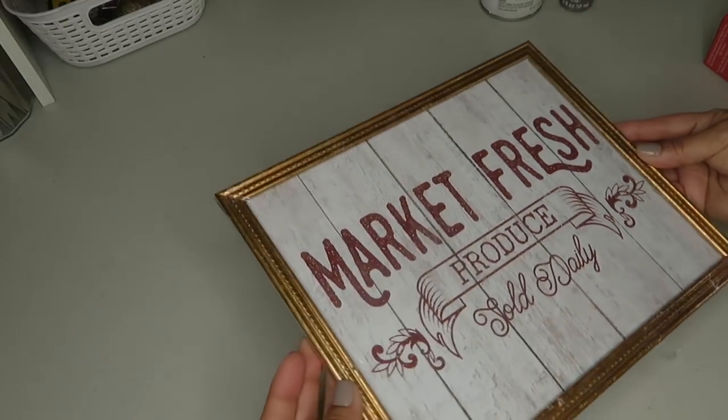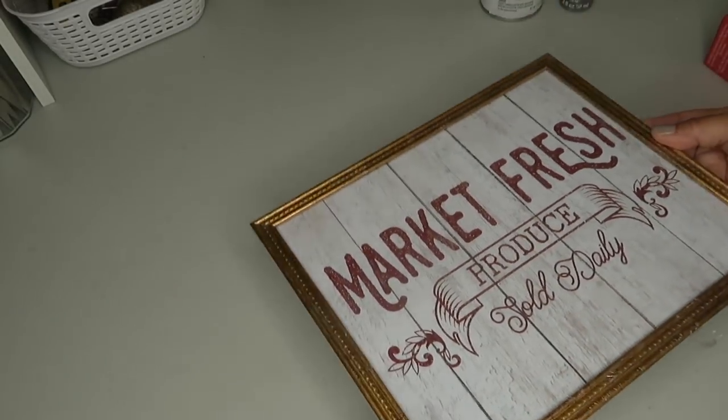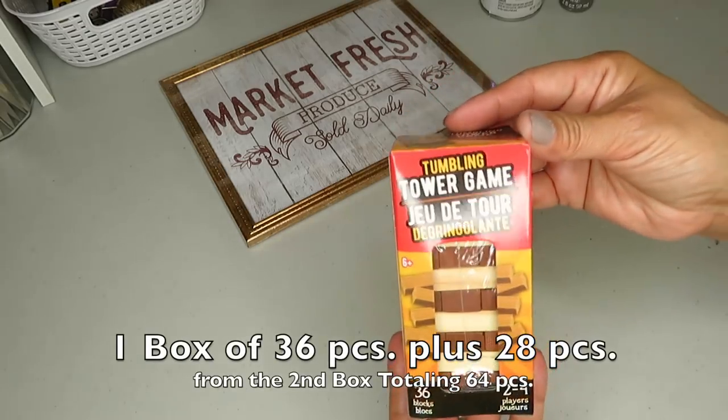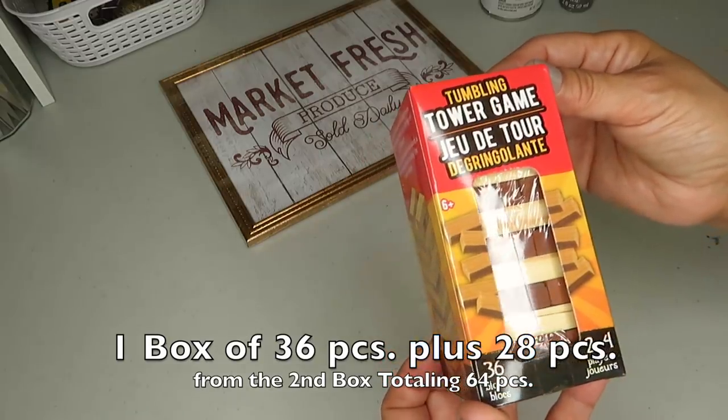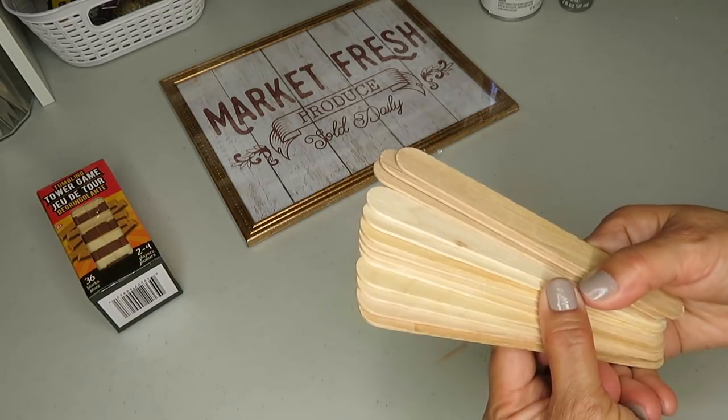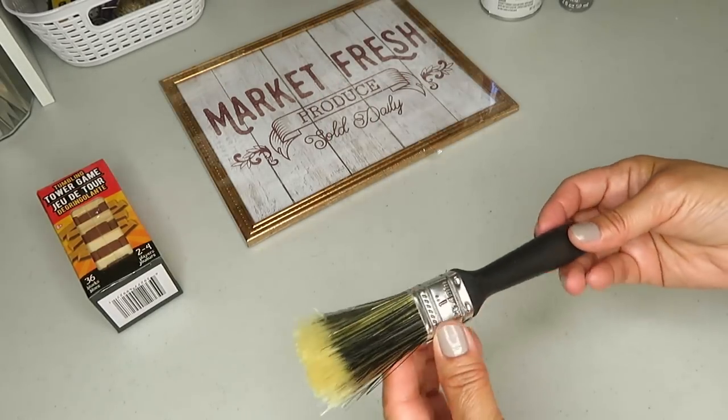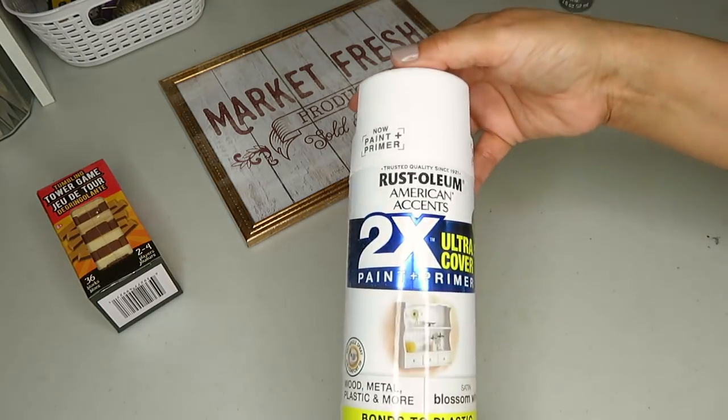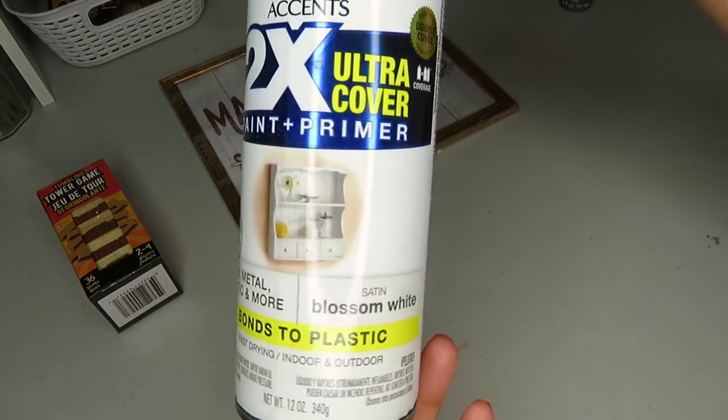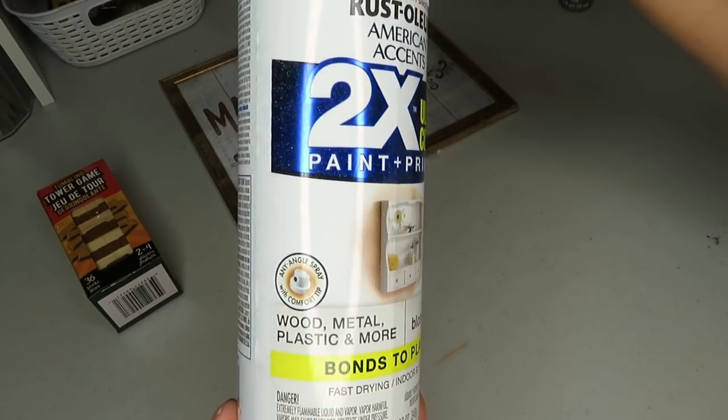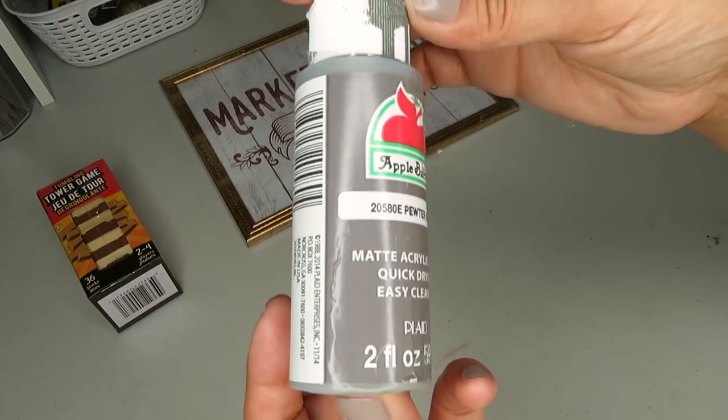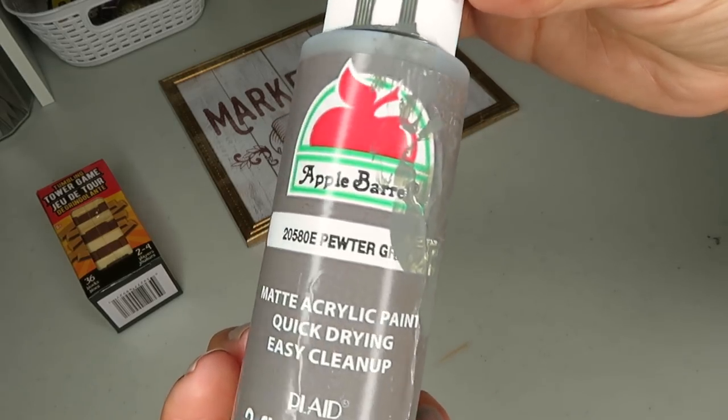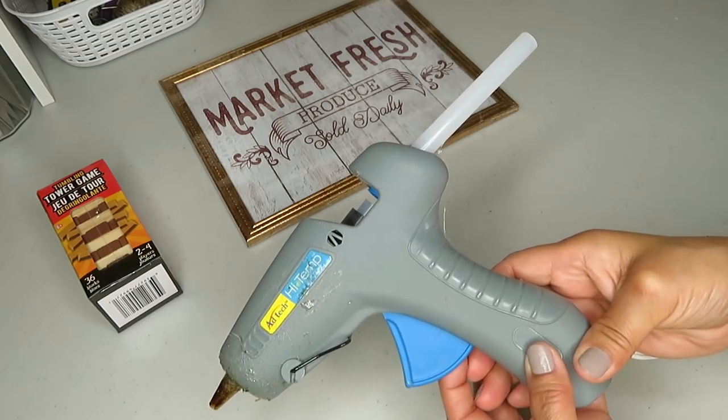I'll be using this farmhouse picture home decor and the tumbling tower game blocks, a total of 64 pieces, some large popsicle sticks, a paintbrush, some Rust-Oleum 2x Ultra Cover paint and primer in the color blossom white, acrylic matte paint in the color pewter gray, and my glue gun.